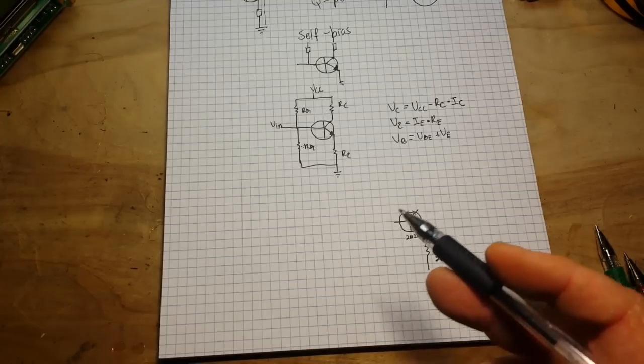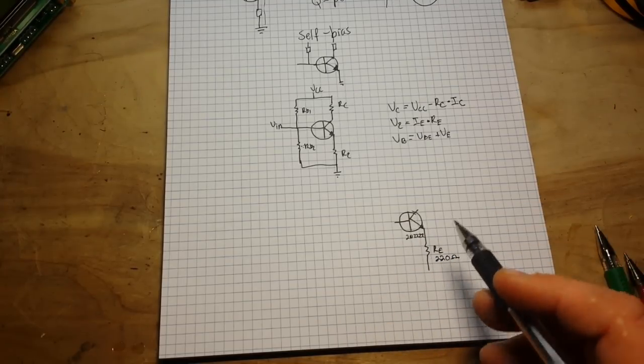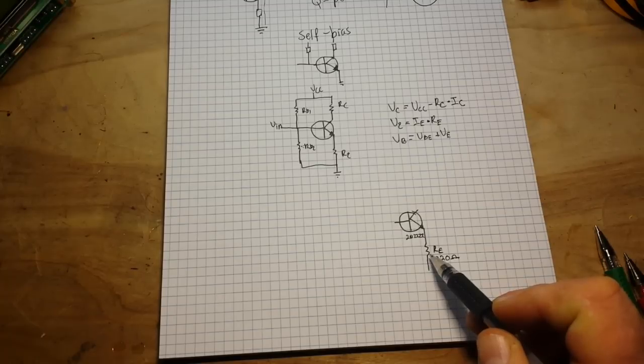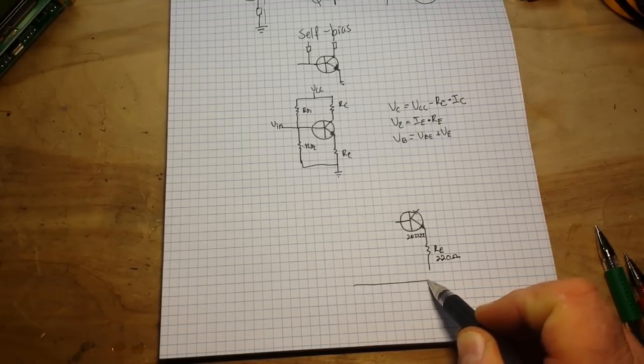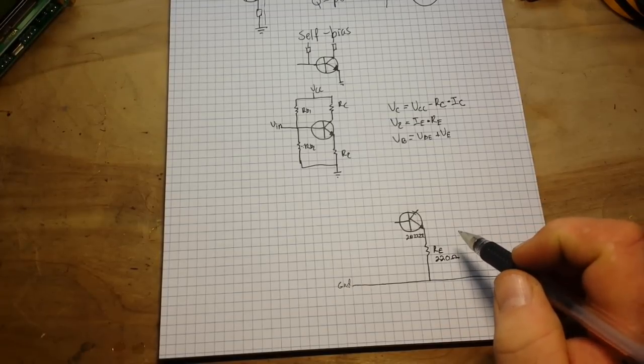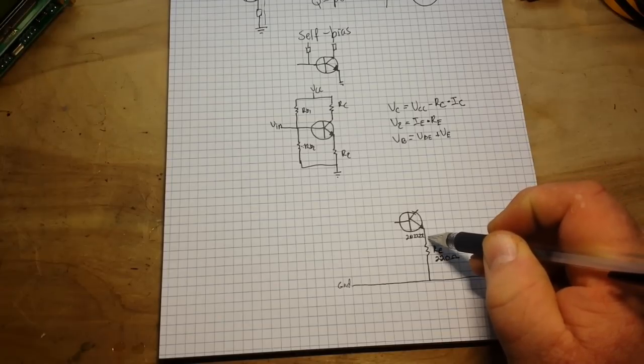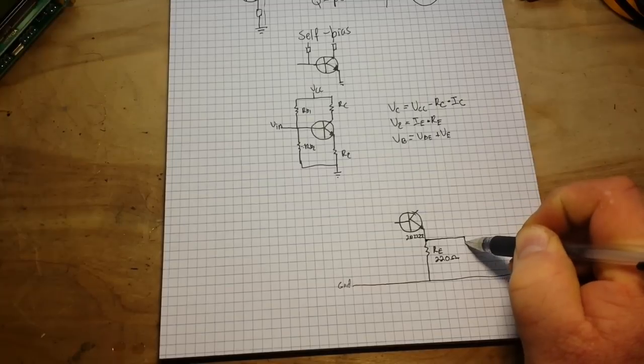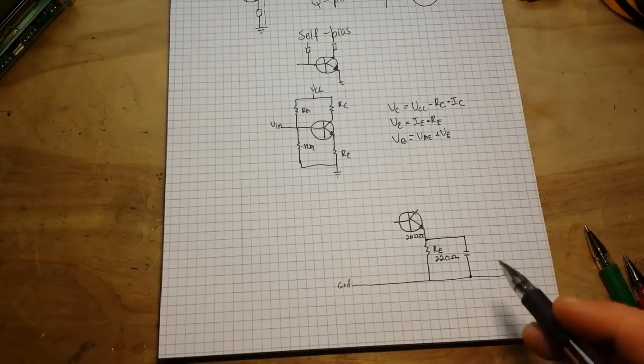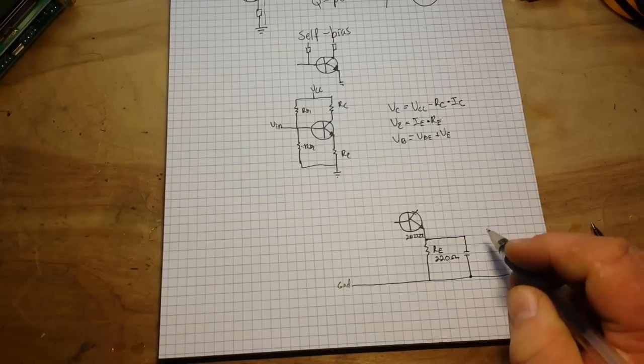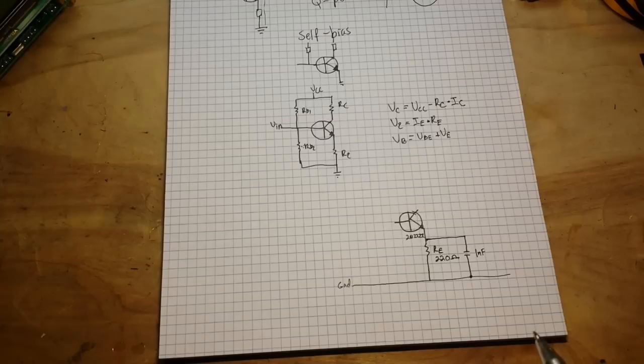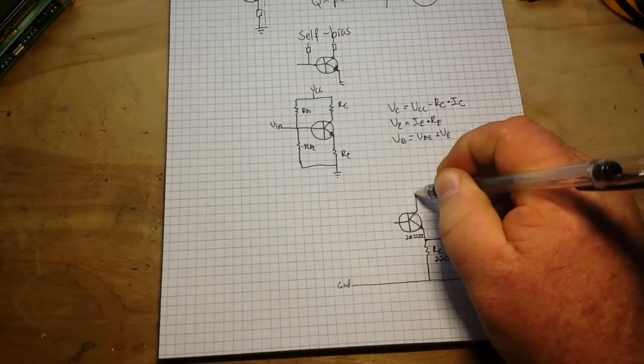BJTs have a thing where the hotter they get, the more they conduct. The more they conduct, the hotter they get. It's a vicious circle. So we need to limit that amount of gain, and we can do that with RE. Now, I said this was going to be a common emitter, so this is our ground point here. And RE is going to go directly to ground. Now, one thing we're going to want to do is decouple the DC out of that circuit if we're going to be dealing with an AC signal. So we're going to throw in a capacitor here. One nanofarad should do it, no problem.